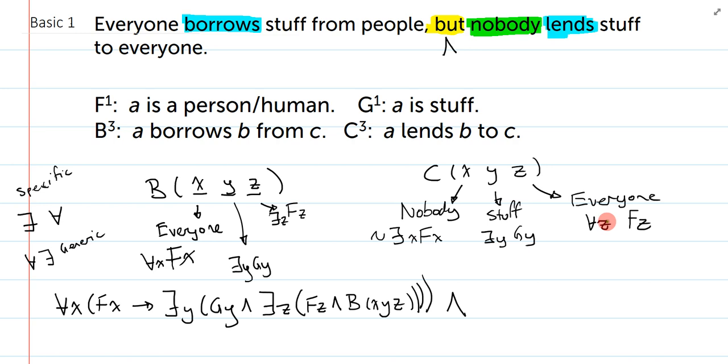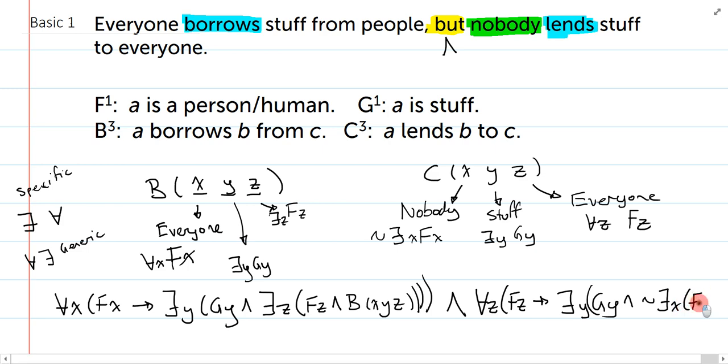So, how do I do this? Well, I'm going to introduce everyone first. So I'll say for all Z, bracket FZ arrow. Then I'm free to introduce whatever I want. So, I'll say stuff, GY and. And now I'll say it's not the case that there exists someone, bracket FX and who lends the stuff to everyone. Close, close, close, close. Okay.